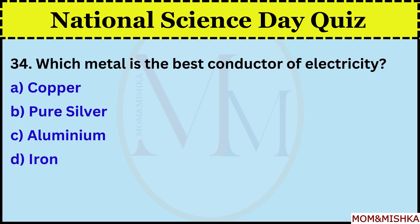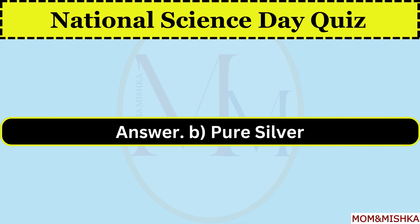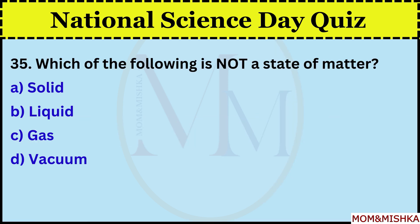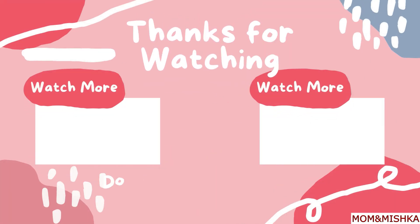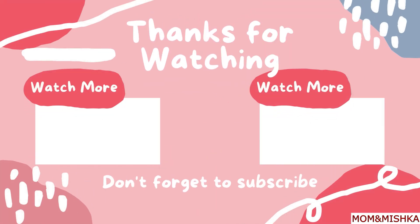Which metal is the best conductor of electricity? Pure silver. Which of the following is not a state of matter? Vacuum. Thanks for watching, see you in the next video.